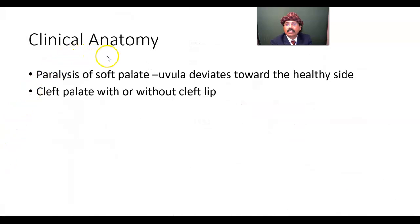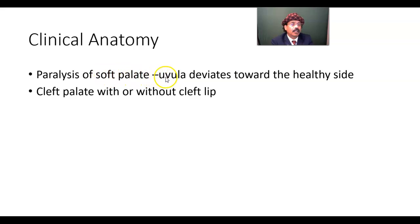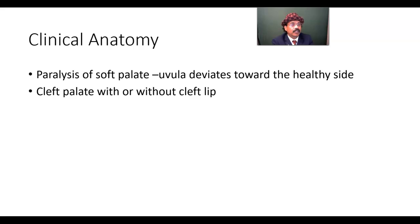Some clinical anatomy: paralysis of the soft palate is possible when the vagus nerve is damaged or when there is cervical instability. If the vagus nerve is paralyzed, the uvula deviates towards the healthy side. To test this, we ask the patient to say 'ah' and observe the soft palate — especially the uvula. It should remain in the midline in a healthy person. If it moves towards one side, that side is healthy and the other side is paralyzed. For example, if the left vagus nerve is paralyzed, the uvula will move towards the right side.